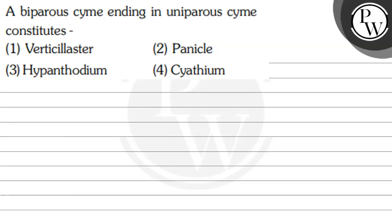Let's read the question. The question says: a biparous cyme ending in uniparous cyme constitutes — option 1: verticillaster, option 2: panicle, option 3: hypanthodium, option 4: cyathium. The question has asked about a kind of inflorescence which is a biparous cyme that ends into a uniparous cyme — what do we call this inflorescence? We have four options and we have to choose the correct one.